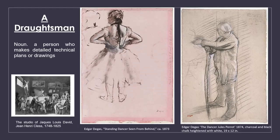Degas was first and foremost a draftsman, whereas the other Impressionist artists drew very little. He learned his drawing skills in college studying classical techniques. A draftsman is a person who makes detailed technical draft plans or drawings.